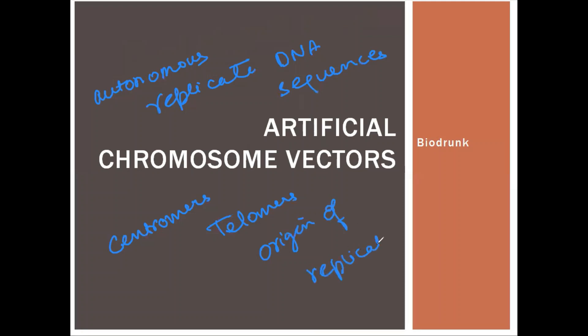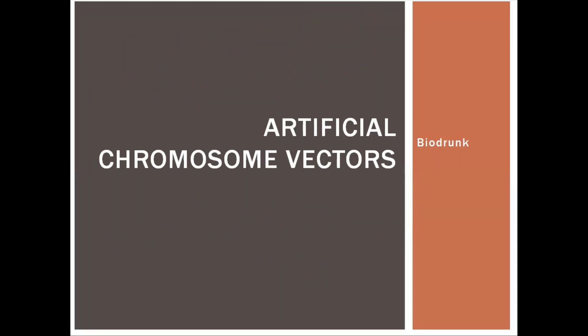So this includes centromeres and telomeres — they are also found in natural chromosomes. Artificial Chromosome Vectors are designed such that you have all these sequences.